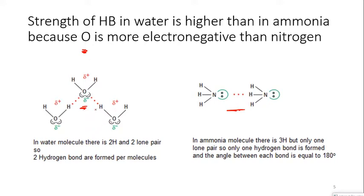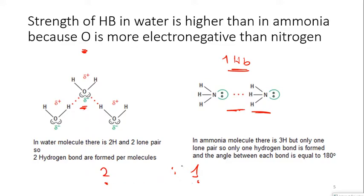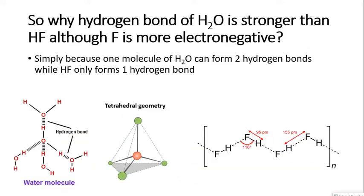Another reason is that each water molecule can form two hydrogen bonds per molecule, while in ammonia you have only one hydrogen bond per molecule. So the ratio of hydrogen bonds per molecule is two to one — water to ammonia. This is what makes hydrogen bonding in water stronger than in ammonia.